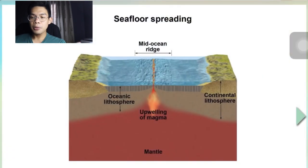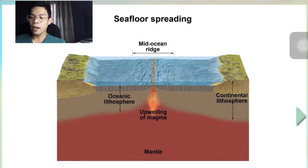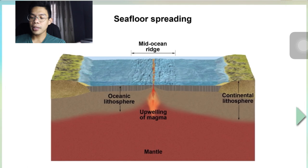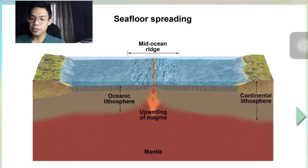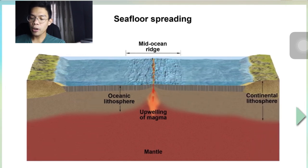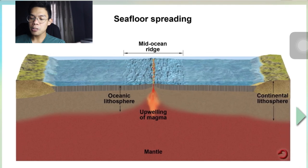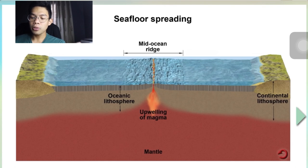Seafloor spreading has created the floor of the Atlantic Ocean over the past 180 million years. Upwelling and spreading of magma continuously adds new oceanic lithosphere equally to the edges of two diverging plates. As it moves away from the ridge, it gradually cools and contracts, increasing its density.